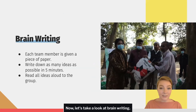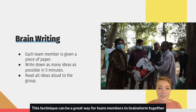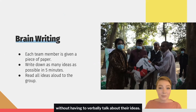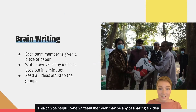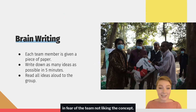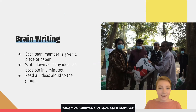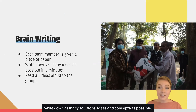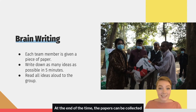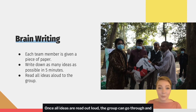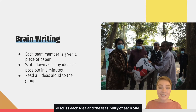Now let's take a look at brain writing. This technique can be a great way for team members to brainstorm together without having to verbally talk about their ideas. This can be helpful when a team member may be shy about sharing an idea in fear of the team not liking the concept. For brain writing, each team member is given a piece of paper. Take five minutes and have each member write down as many solutions, ideas, and concepts as possible. At the end of the time, the papers can be collected and the team leader can read the ideas to the group. Once all ideas are read out loud, the group can go through and discuss each idea and the feasibility of each one.